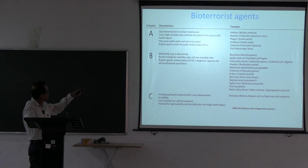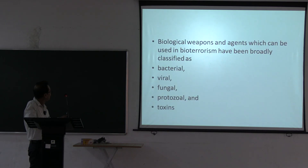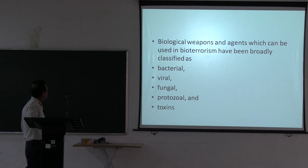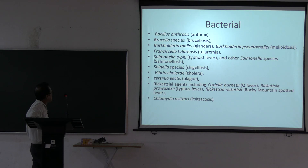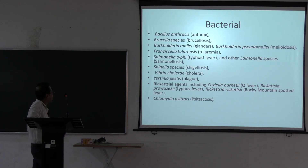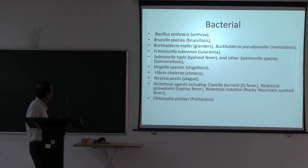Biological agents can also be classified as bacterial, viral, fungal, protozoal, and toxins. Bacterial agents include: Bacillus anthracis, Brucella, Burkholderia mallei, Burkholderia pseudomallei, Francisella tularensis, Salmonella typhi, Shigella, Vibrio, Yersinia pestis, and Rickettsial agents such as Coxiella burnetii, Rickettsia prowazekii, and Rickettsia rickettsii.